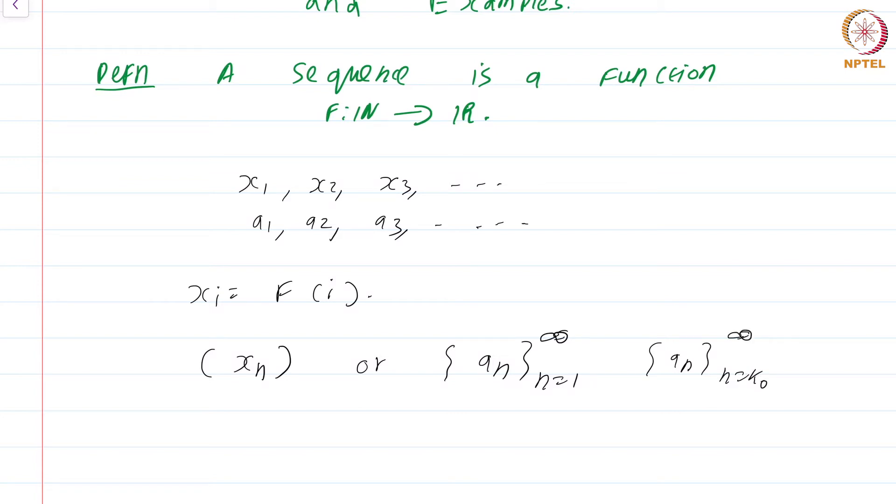We can always start a sequence not from just x1, but from some further point along, sometimes even negative. You can start from x minus 3, x minus 2, and so on. These are minor modifications to the definition of a sequence. We might occasionally use such sequences which do not begin at x1. In the future, we will just use any one of these notations for our sequences.